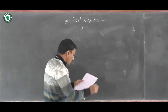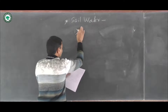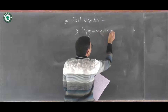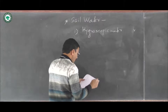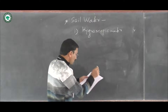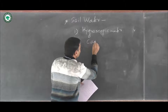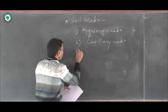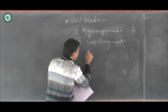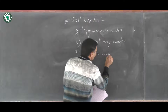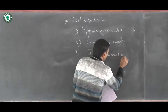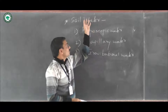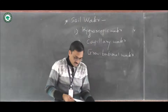Soil water is divided as: first, hygroscopic water — this is water absorbed by dry soil; second, capillary water; and third, gravitational water.